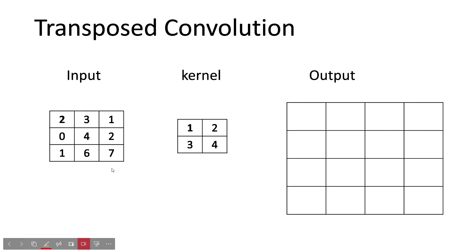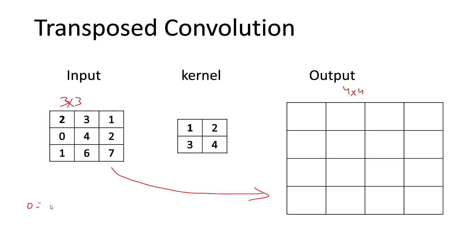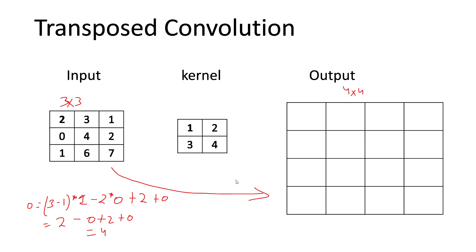Transposed convolution figures out a way to increase the spatial dimension. The input here is 3x3 and the output is 4x4. The formula is: output = (input - 1) * stride - 2 * padding + kernel + output_padding. With input=3, stride=1, padding=0, kernel=2, and output_padding=0: (3-1)*1 = 2, minus zero, plus 2, plus 0 = 4. That's how we get the 4x4 output.